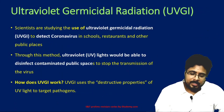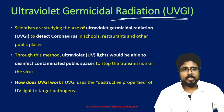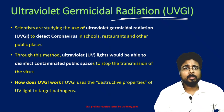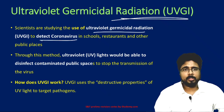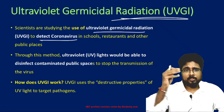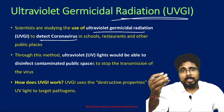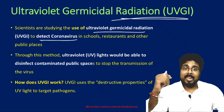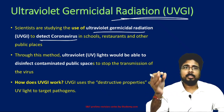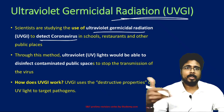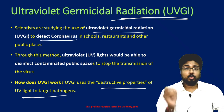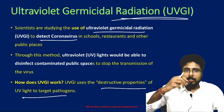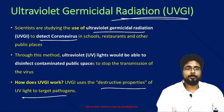Next, Ultraviolet Germicidal Radiation (UVGI). Scientists are studying the use of UVGI to disinfect coronavirus in schools, restaurants, and other public places. Ultraviolet rays are sent to sanitize contaminated public places. It uses the destructive properties of UV light to target and destroy pathogens.